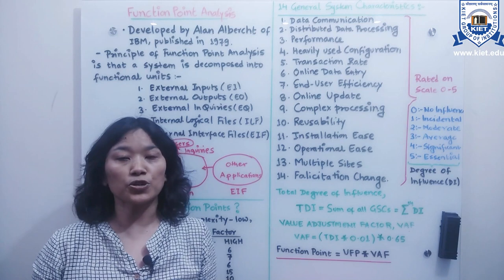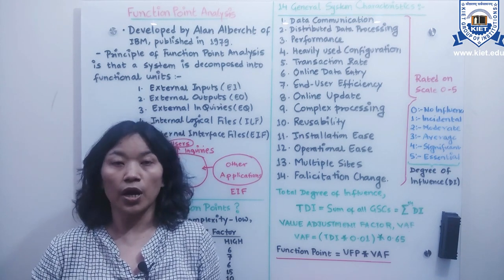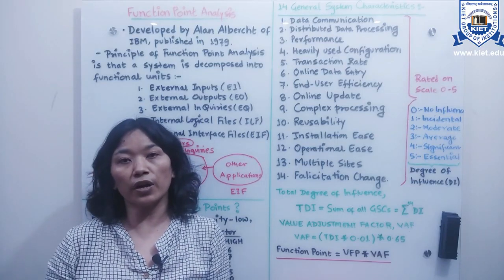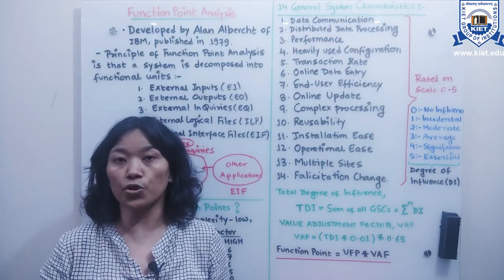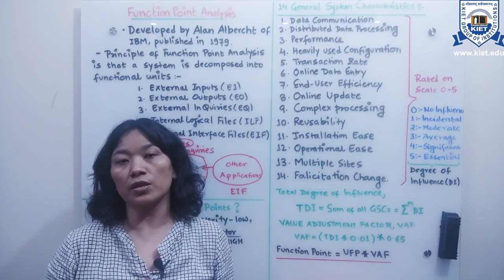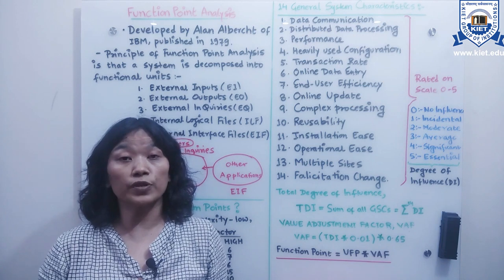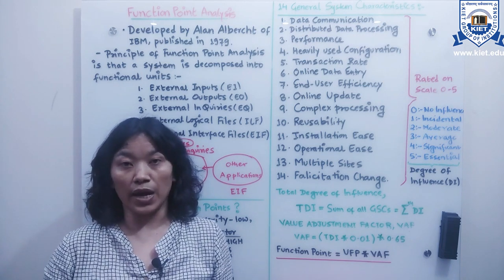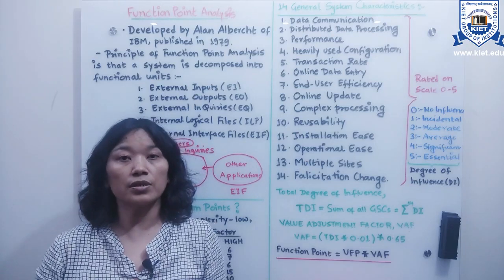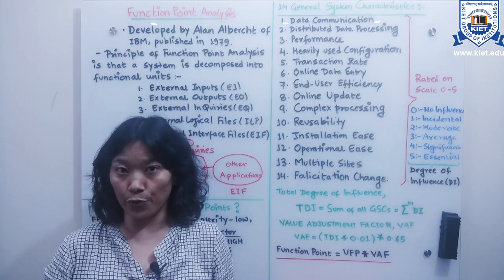Hello students, welcome back to the lecture series of the software engineering course. As already discussed, a term we are continuously using is software metrics, and software metrics can be measured in terms of the size of the software. There are two important ways to calculate the size of the software. The first one is lines of code.